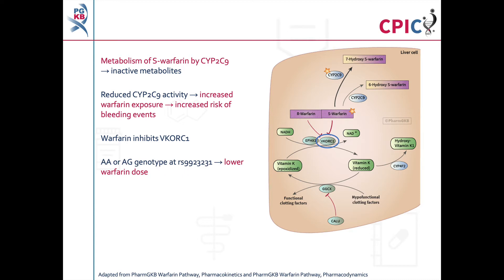The variant RS9923231 lies upstream of the VKORC1 gene. Patients with the AA or AG genotypes at this variant have been found to have lower warfarin dose requirements.